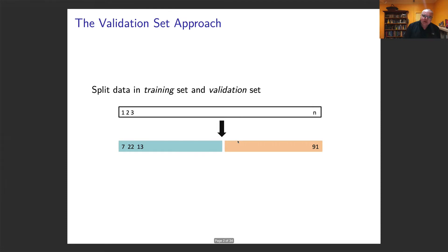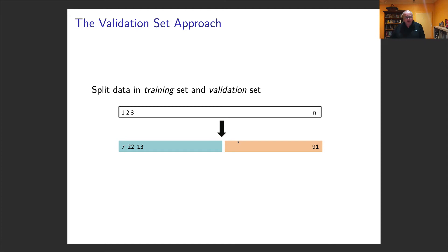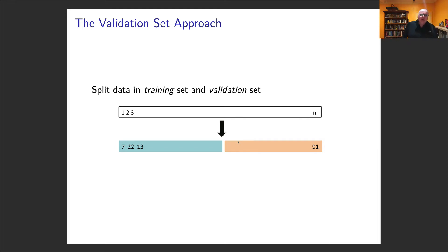Let's talk about cross validation. We can't just use data to train a model and stop there — we need an idea of how good it's going to be with new data sets. So we need to put some aside to test it, so we can get what we call our test mean square error.